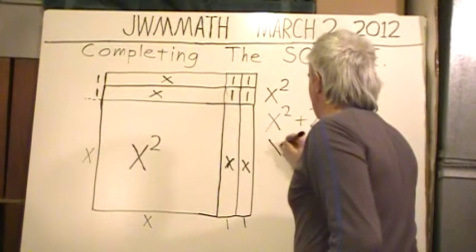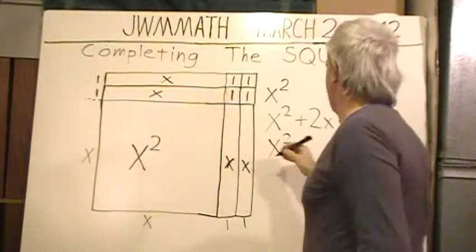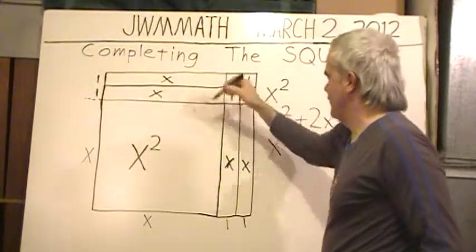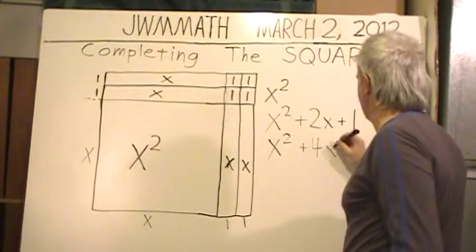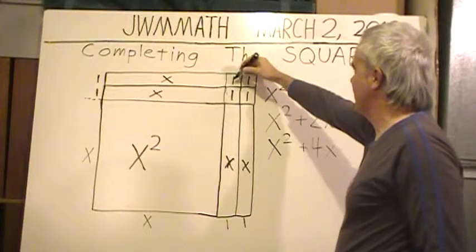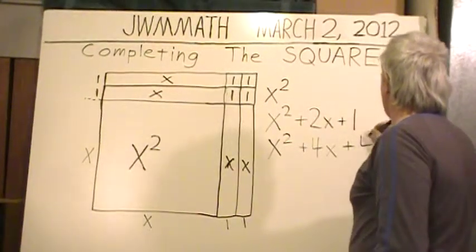So that is going to yield, algebraically, x squared plus 2x plus 1. I am going to build a larger square. Move back to my diagram and add on another skinny rectangle. And over here as well, another skinny rectangle.